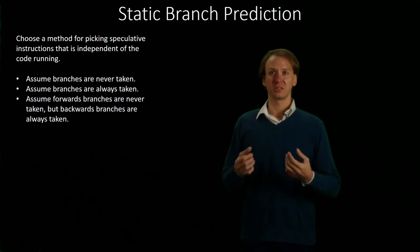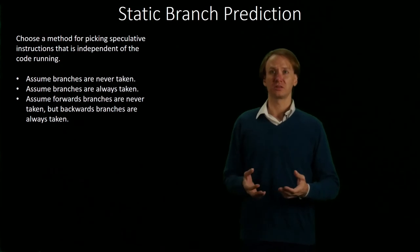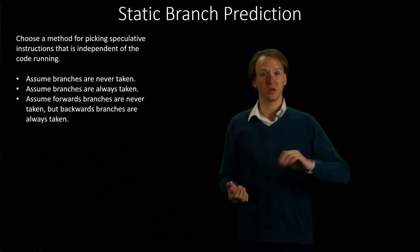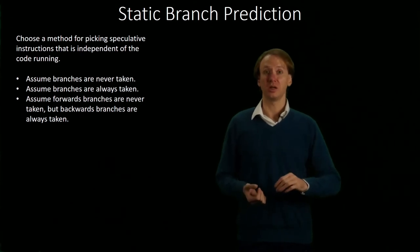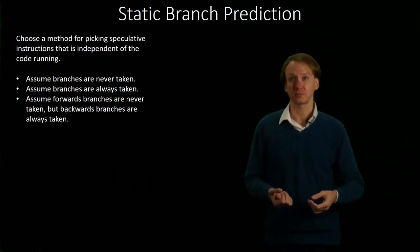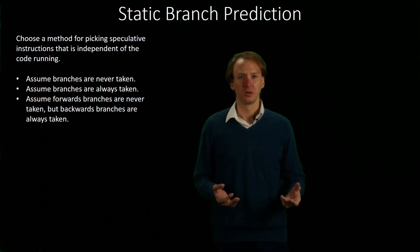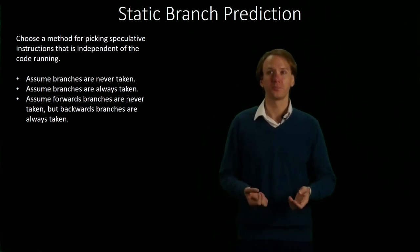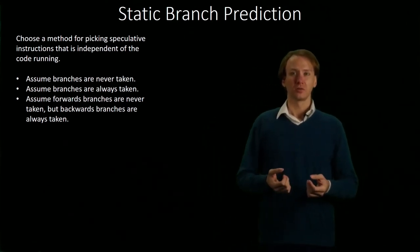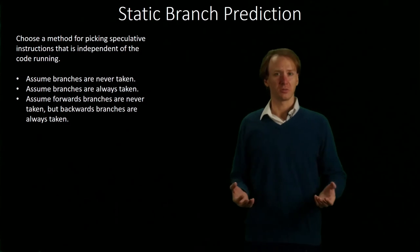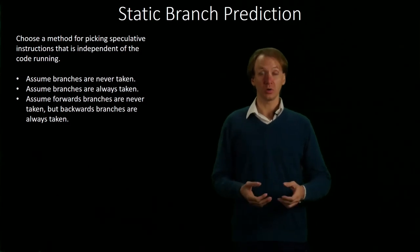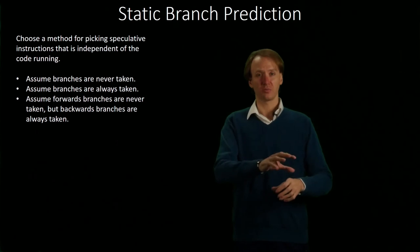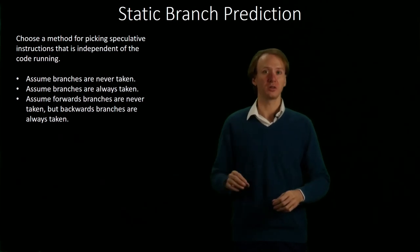Some of the simplest methods are just to assume that we never take branches, so we'll just speculatively load the next instruction in the list. That's really simple — the processor almost wants to do that anyway. Something slightly more complicated would be to always assume that our branches are taken, so we just grab the branch target address and immediately try to run that instruction.